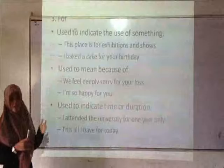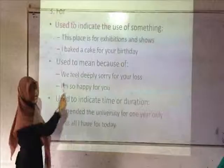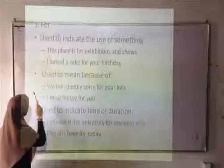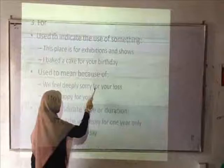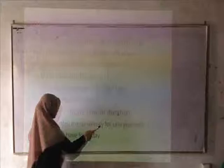The third preposition which has special uses is 'for'. First, 'for' is used to indicate the use of something. For example: this place is for exhibitions and shows — 'for' refers to the use of the place. Second, 'for' is used to mean because of or reason: we don't get to sorry for your boss — 'for' refers to the reason. Third, 'for' is used to indicate a time or duration: I attended the university for one year only — 'for' refers to the duration of one year.